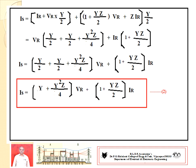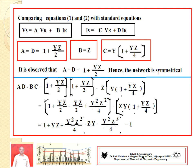Compare these two equations with the generalized constant standard expressions: VS equals A times VR plus B times IR, and IS equals C times VR plus D times IR. Writing down the values: A equals D equals 1 plus YZ/2; B equals Z; and C equals Y times (1 plus YZ/4). This derivation is very important.